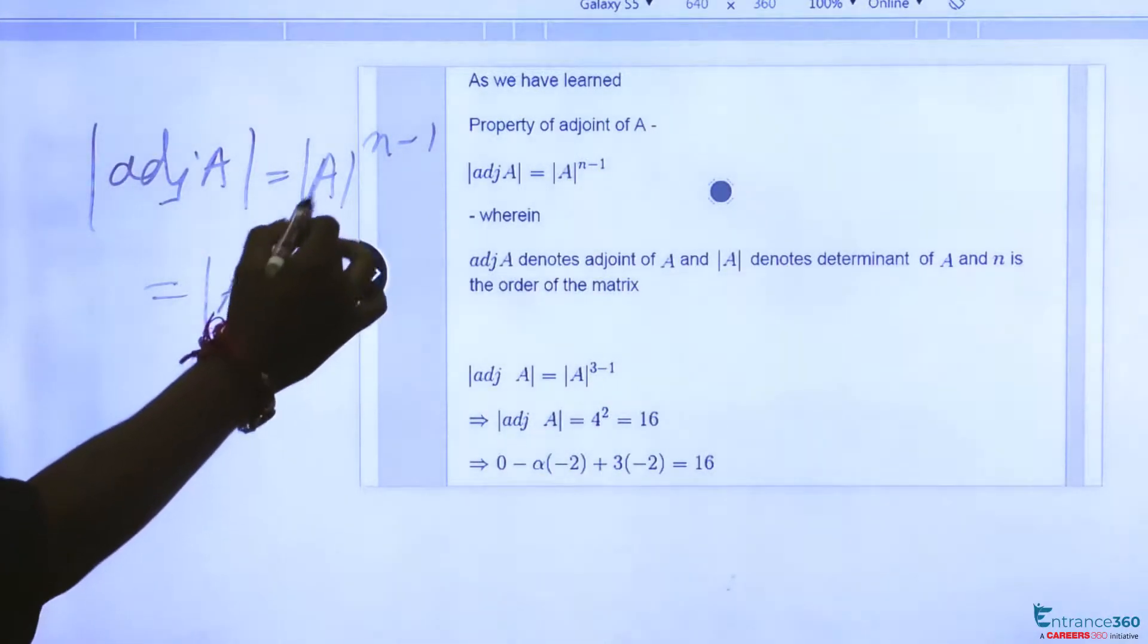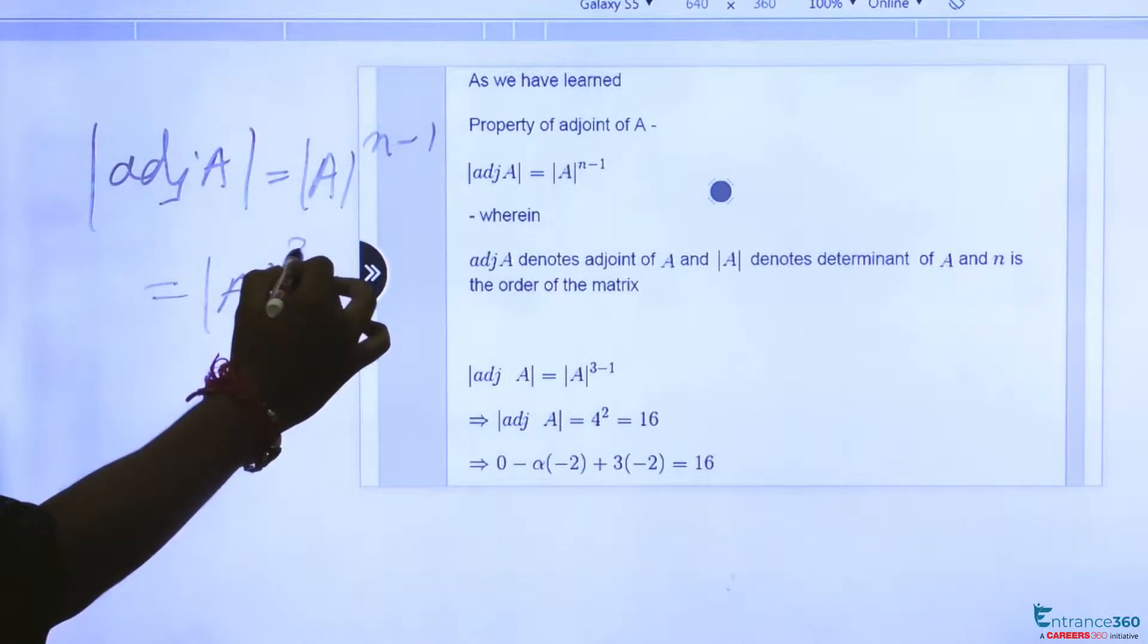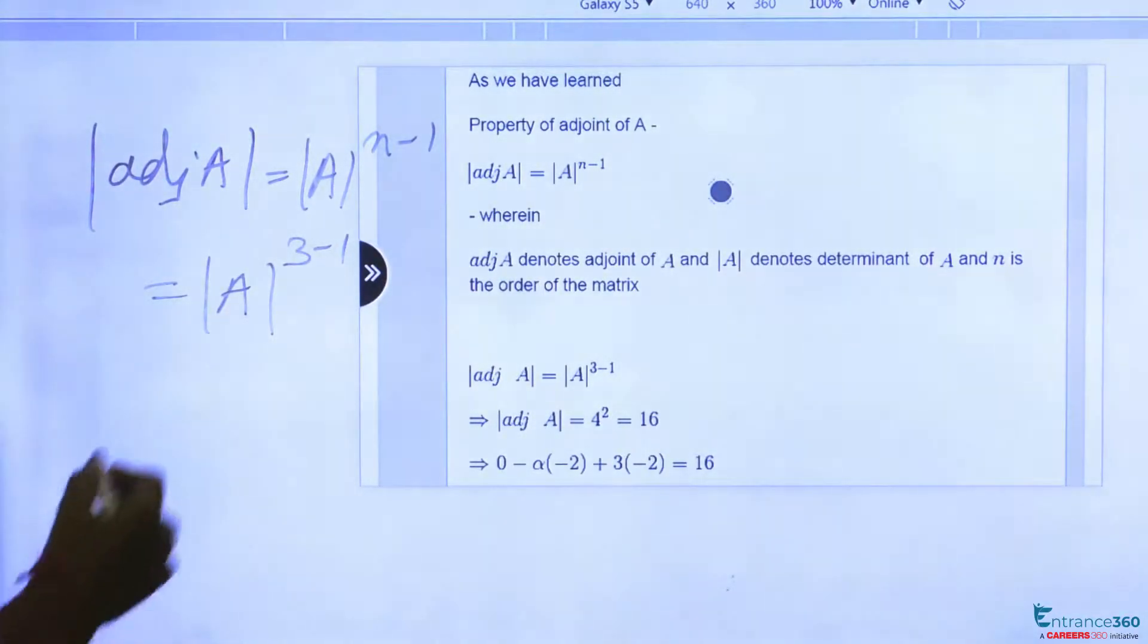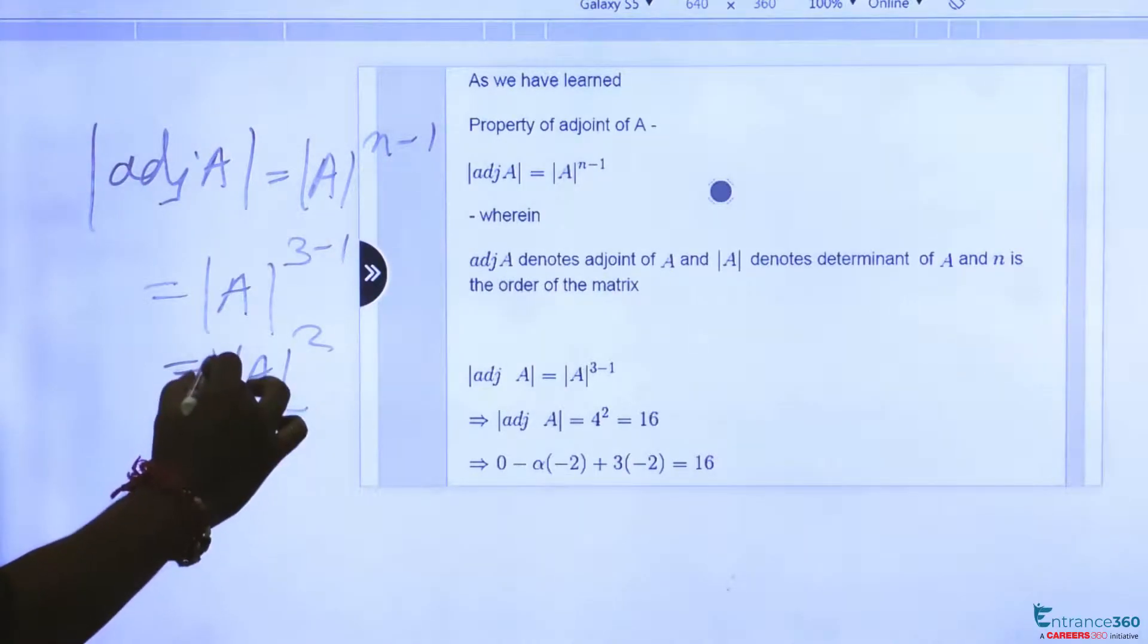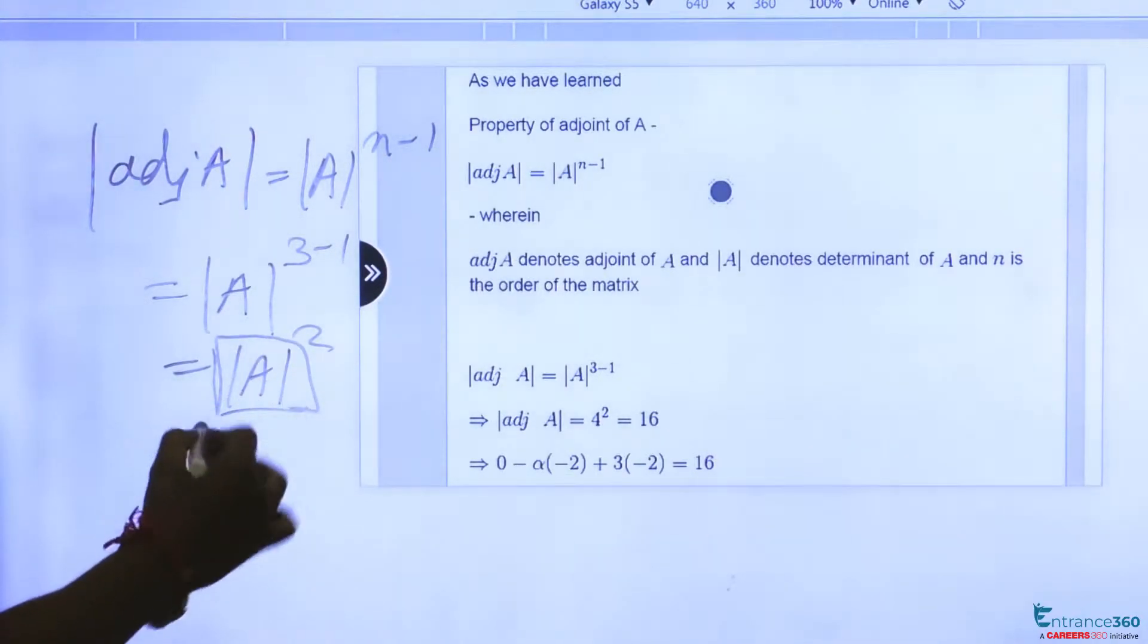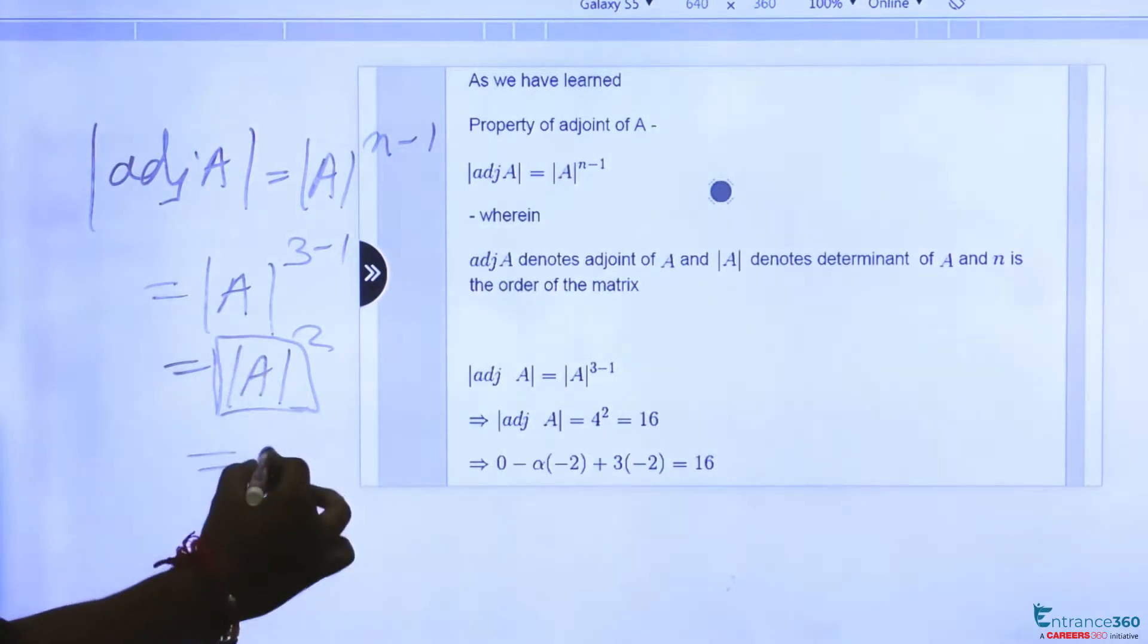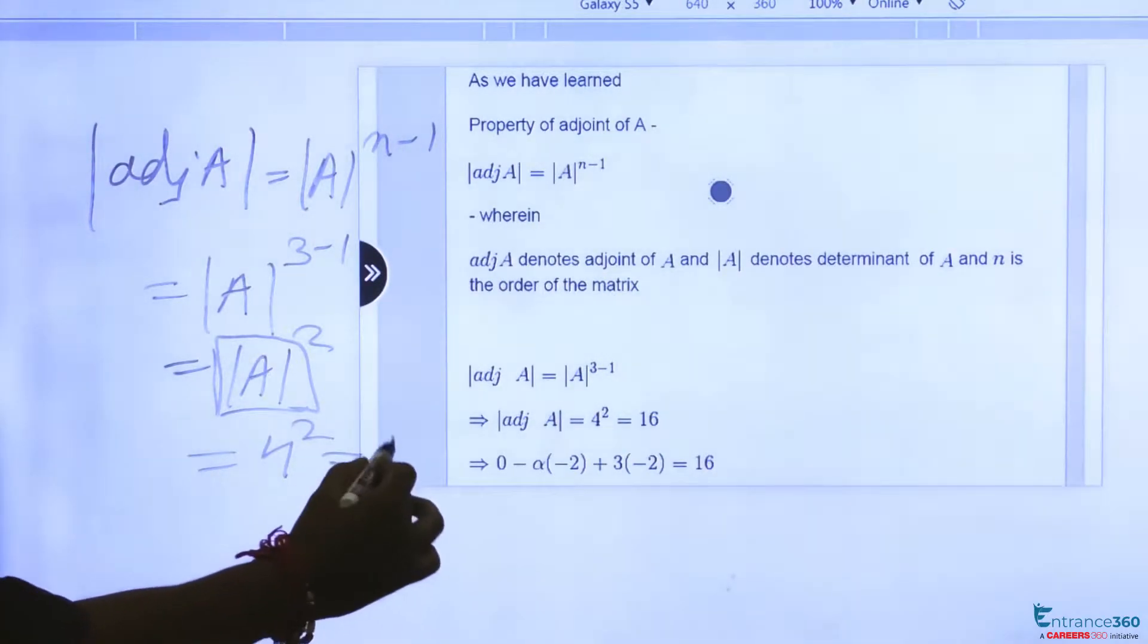So we have been given order of matrix to be 3, so we can write it as |A|^(3-1) which will be equal to |A|^2. In question we have been given |A| equal to 4, so we can write it as 4^2 equal to 16.